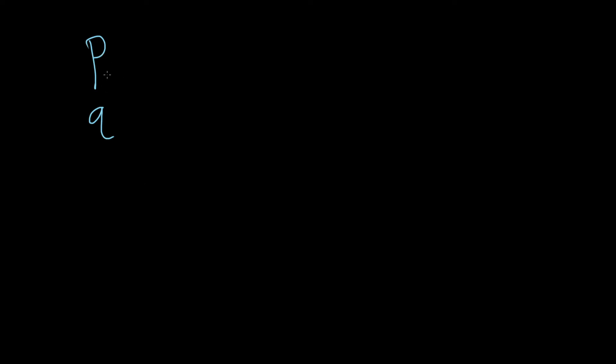So we have two statement variables, p and q, and we're going to look at something called the disjunction of p and q. So the disjunction, it's a fancy word, of p and q.